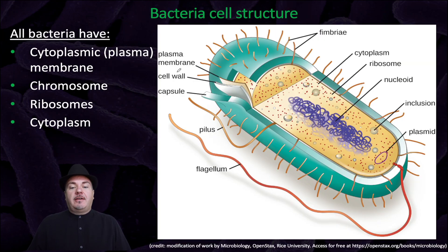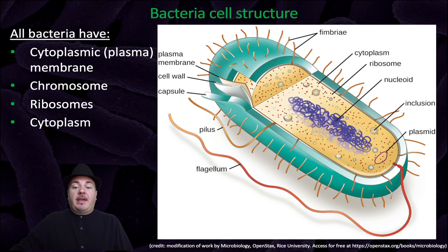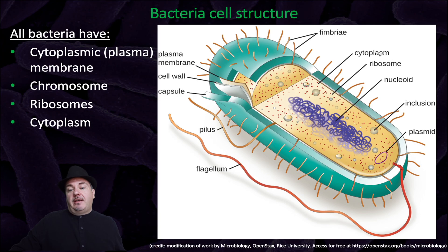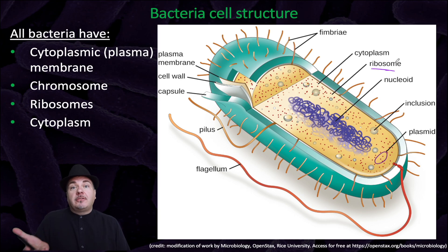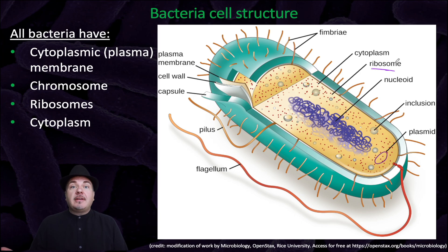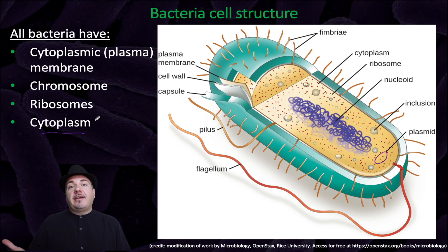There are some things that all bacteria have. All bacteria have a cytoplasmic or plasma membrane — the phospholipid bilayer that defines the boundary of the cell. Bacteria must have a chromosome — DNA to carry genetic information — located in a region called the nucleoid. They must also have ribosomes, because DNA codes for proteins and ribosomes are the workbenches where proteins are built. And they have cytoplasm, the fluid-like substance inside the cell.